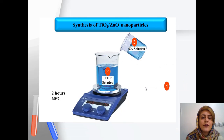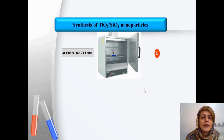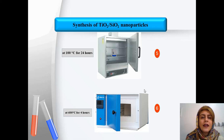Next, the solution of zinc acetate is added to the hydrolyzed TTIP solution, and this solution is stirred for about two hours at 60 degrees centigrade. In order to evaporate the solvent, this solution is heated in an oven at 100 degrees centigrade for about 24 hours. It is then calcinated at a temperature of 600 degrees centigrade for about four hours.